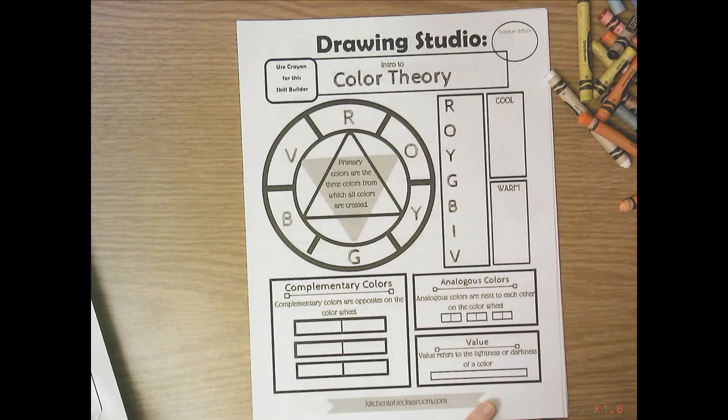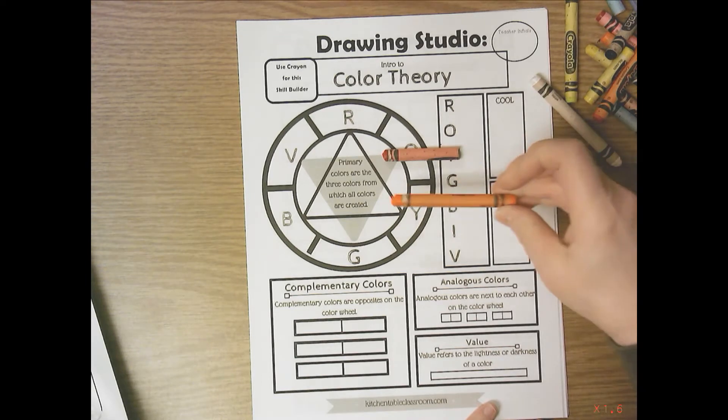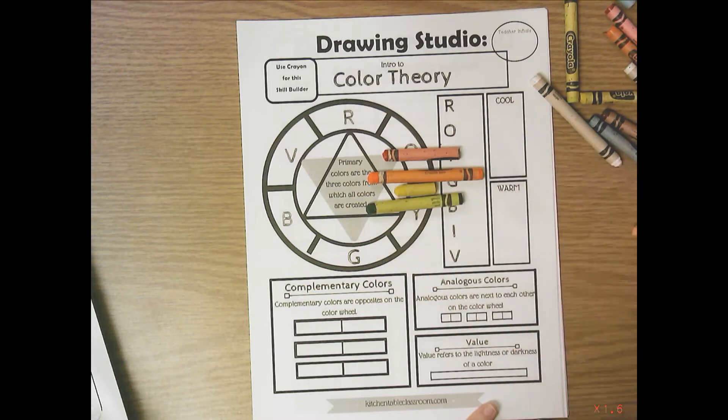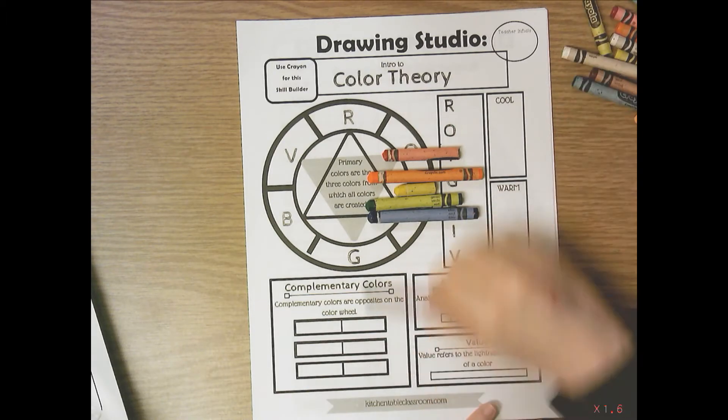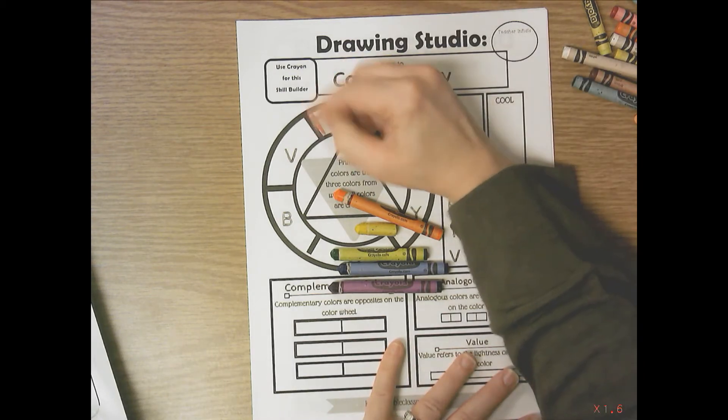So you're going to need the six colors of the rainbow. You're going to need red, orange, yellow, green, blue, violet, and that might take you a little while to find them, especially if you're borrowing my crayons. If you have a nice new crayon box that you're using, it might be easier for you to find them.